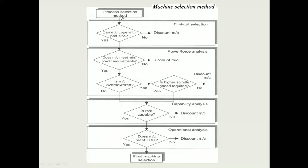Next, you check whether the machine can cope with the part size — whether the selected component matches the machine. If yes, proceed to the next step: power-force analysis. You identify whether the machine meets minimum power requirements. If yes, it moves to the next stage. If the machine is overpowered, you check whether a higher spindle speed is required.